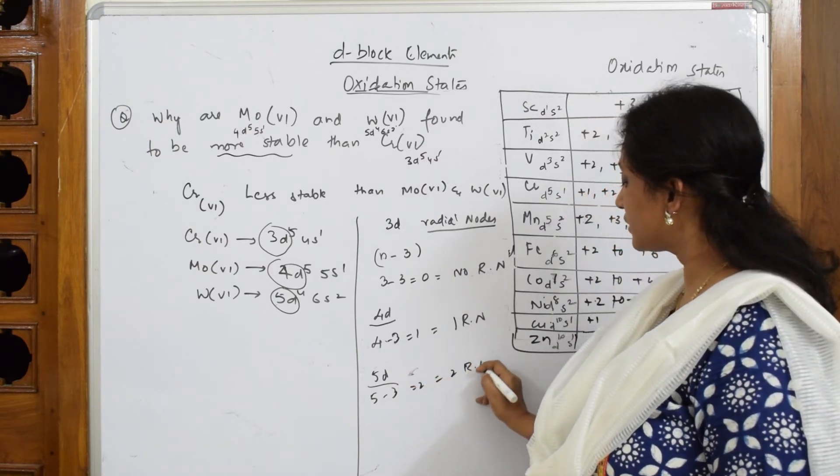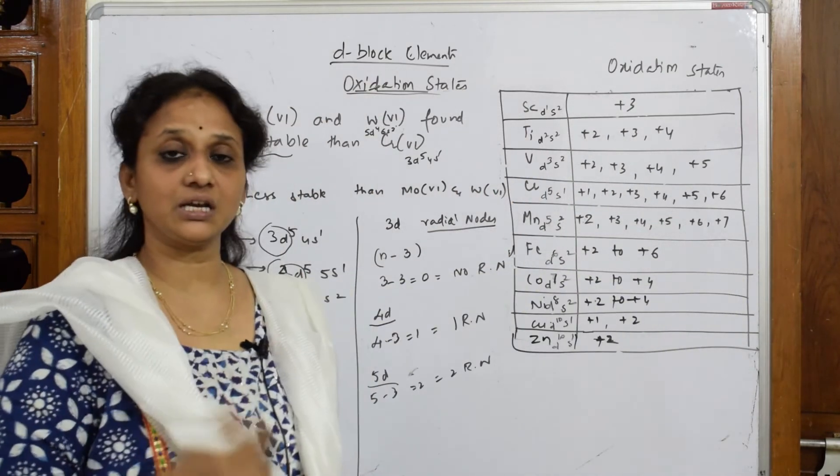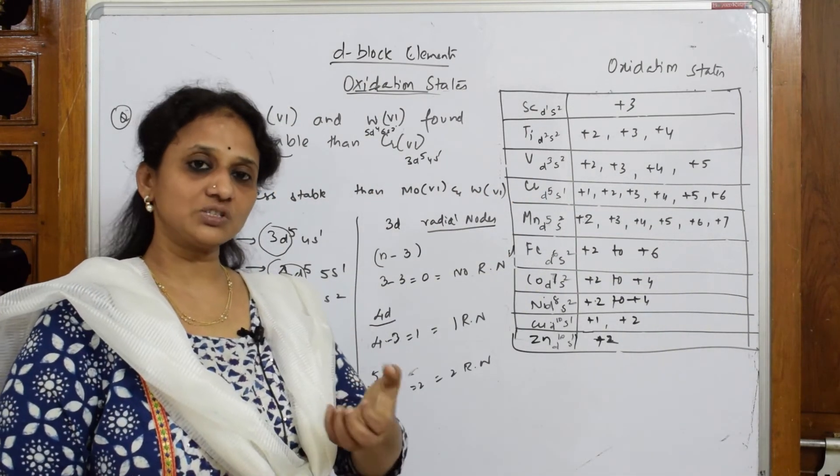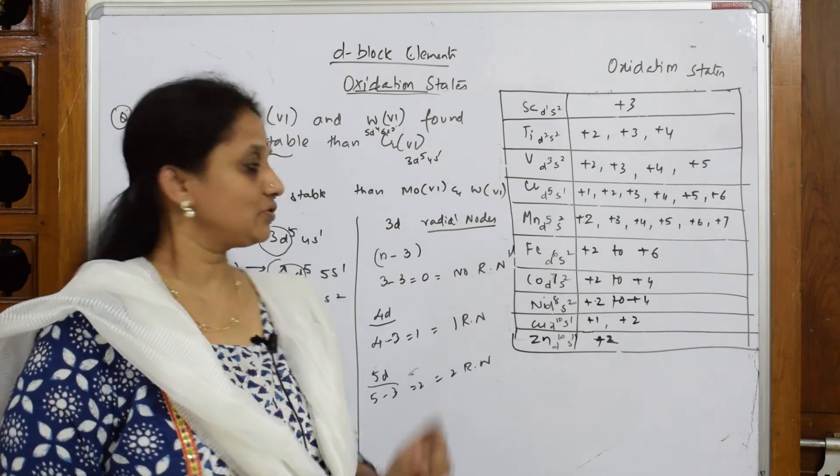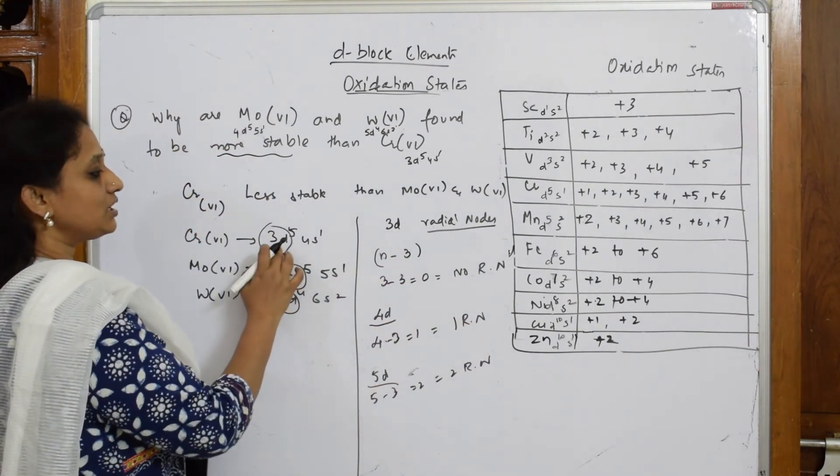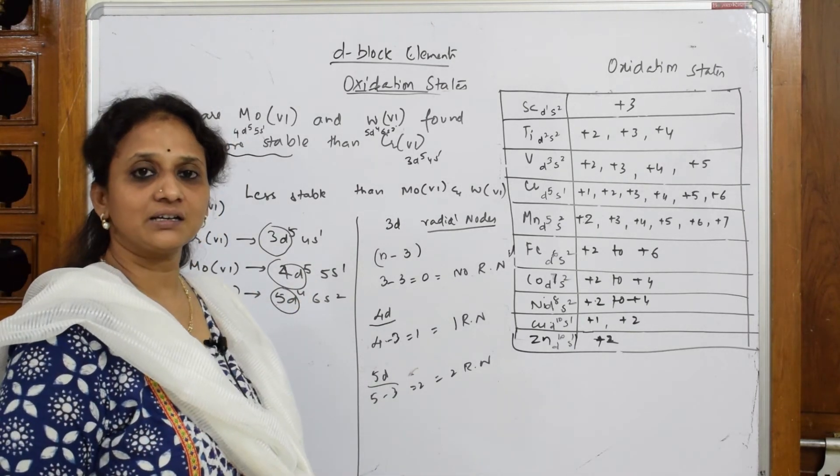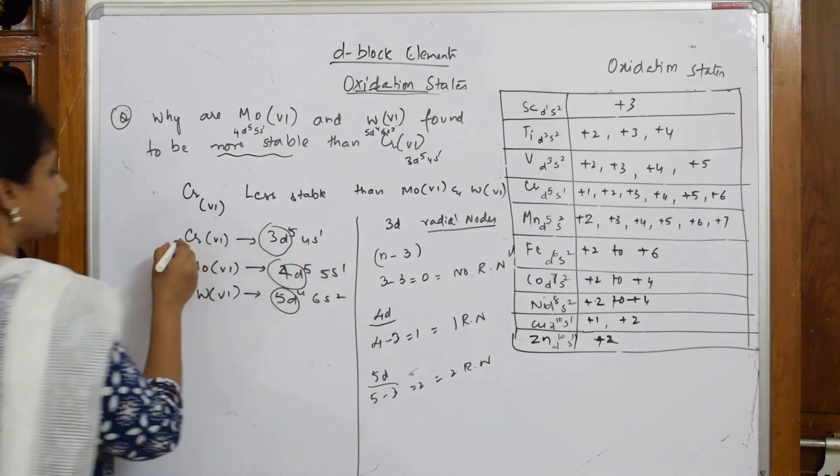radial nodes. Now what is the use of radial nodes? Suppose if an element doesn't have any radial node, the attraction towards nucleus is very strong. So where are we finding this attraction? In 3d, isn't it? In 3d, nuclear attraction is very high because there is no radial node present. So this attraction, I'm going